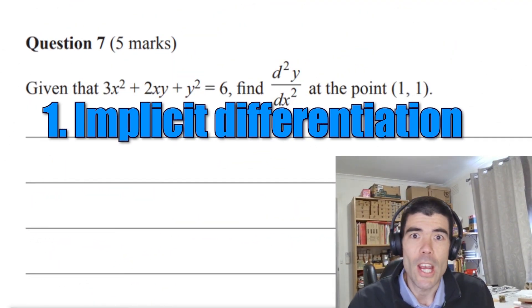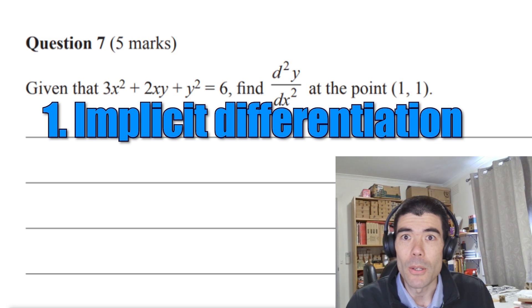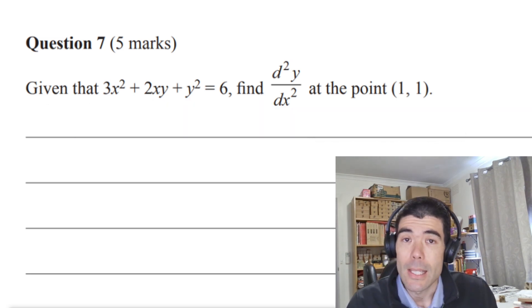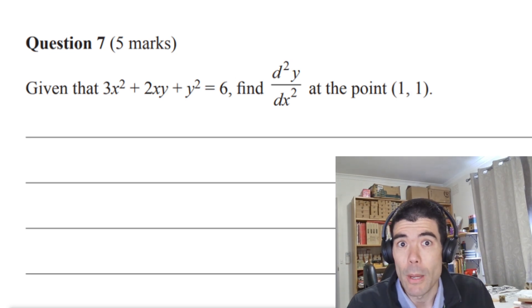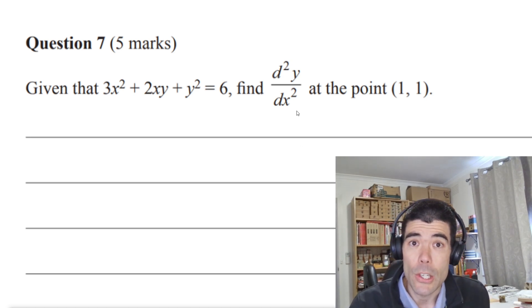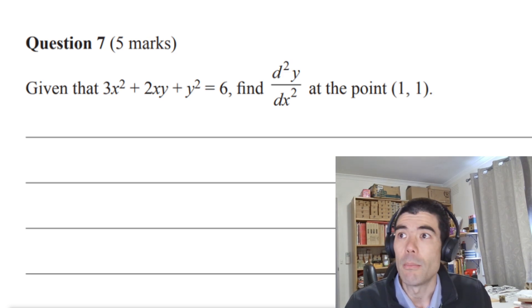Implicit differentiation. This has come on exam one basically every year for the last 10 or 20 years. Doesn't necessarily mean it would be on your exam, but it's a pretty good chance. This one is a little bit different in that we're asked for the second derivative, so we're going to have to do the implicit differentiation twice.